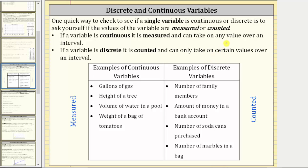Let's look at the examples below. For the examples of continuous variables, we have gallons of gas, height of a tree, volume of water in a pool, and weight of a bag of tomatoes. All of these are measured and therefore they are examples of continuous variables. Also notice how these variables can take on any value over a particular interval, which is another reason why they are continuous variables.